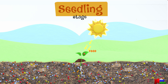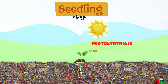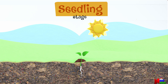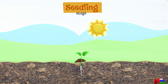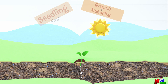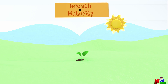This growing plant traps sunlight and starts preparing its own food. Green plants make their food through a process called photosynthesis. The seedling begins to develop leaves and stems — it's like the plant's way of growing up and getting bigger. The next phase in the plant's life cycle is growth and maturity.